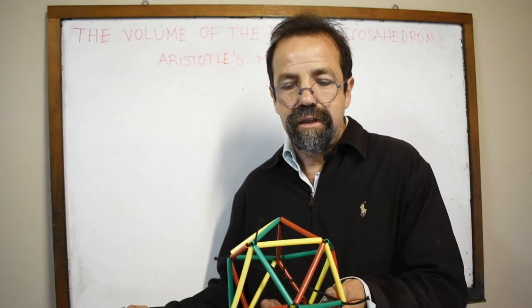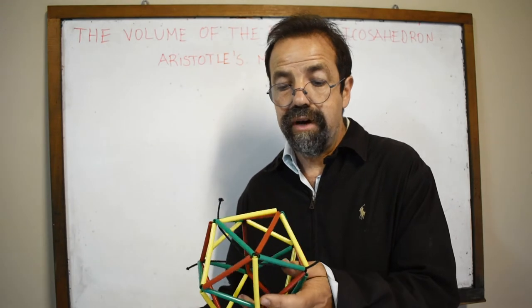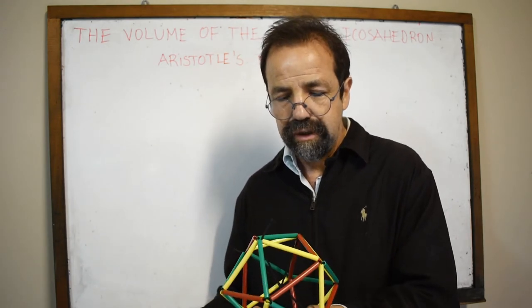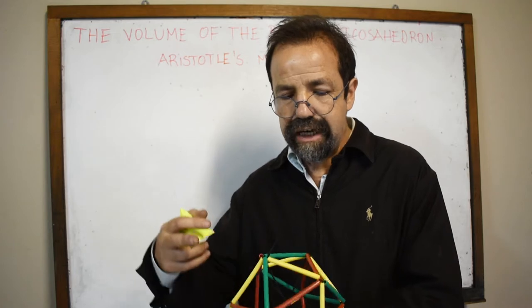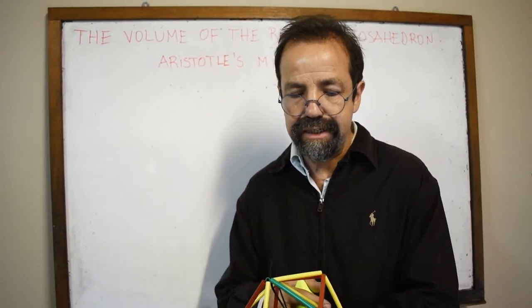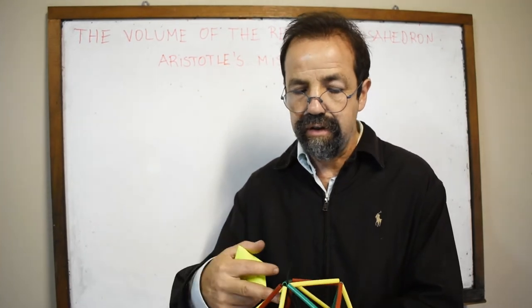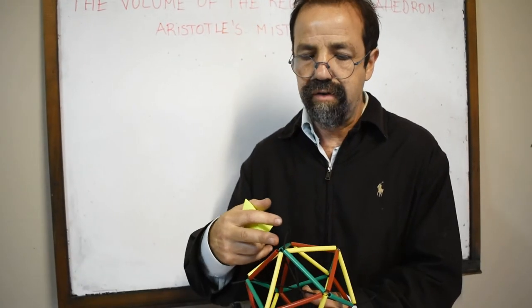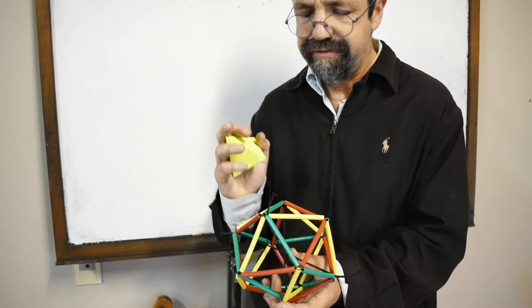This is a representation of a regular icosahedron. If you draw all the diagonals, they intersect in a point, in a center. This center is equidistant from all the vertices, all the sides, and all the faces.